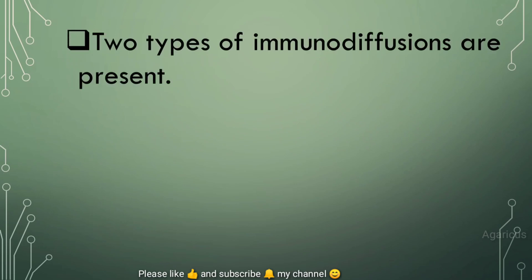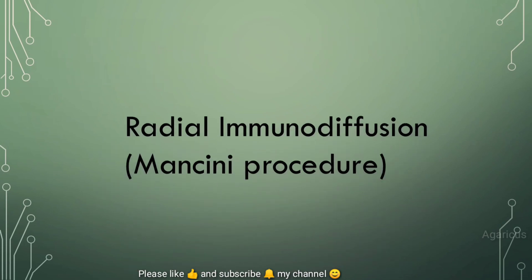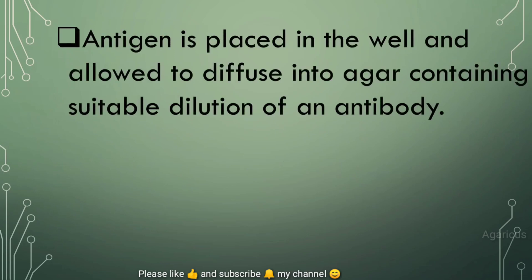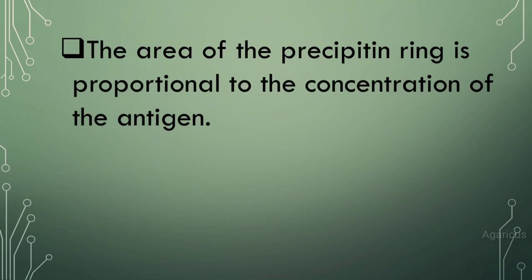Two types of immunodiffusion are present: radial immunodiffusion and double immunodiffusion. First, radial immunodiffusion, also known as the Mancini procedure. Antigen is placed in a well and allowed to diffuse into agar containing a suitable dilution of antibody. As the antigen diffuses into the agar, a precipitant ring forms around the well. The area of the precipitant ring is proportional to the concentration of the antigen.